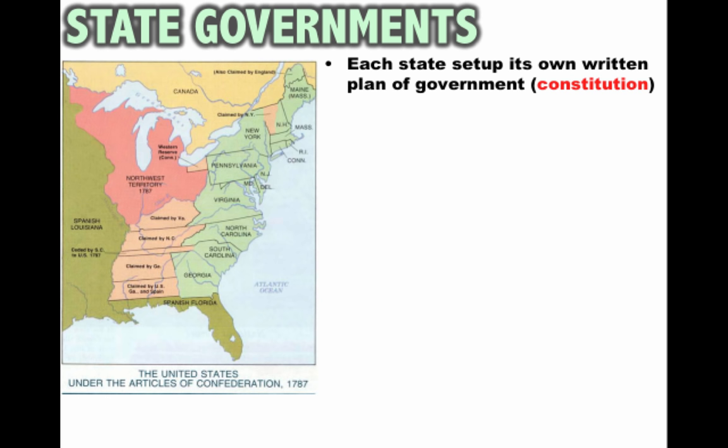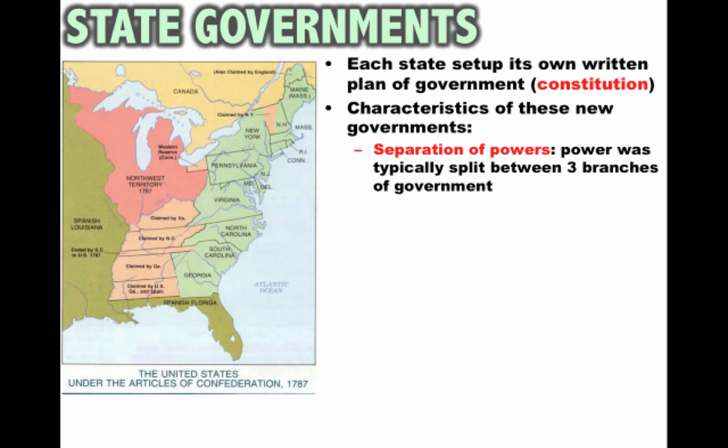Before we get into any national governments, one thing you need to keep in mind is all 13 colonies upon independence had to create their own state governments. Each state set up its own written plan of government under a state constitution, and they're going to look very different depending upon which state you focus on.